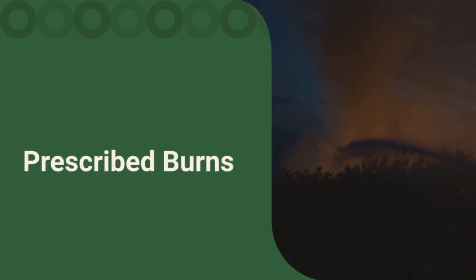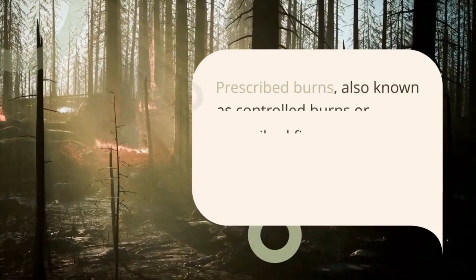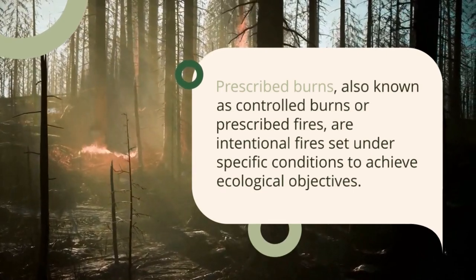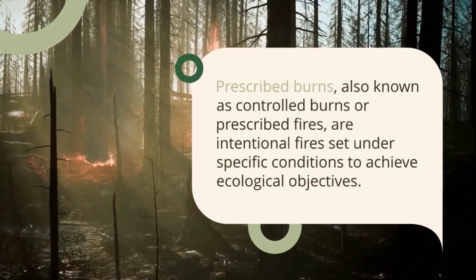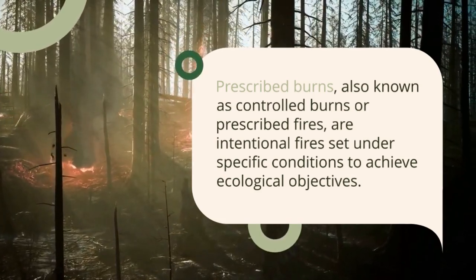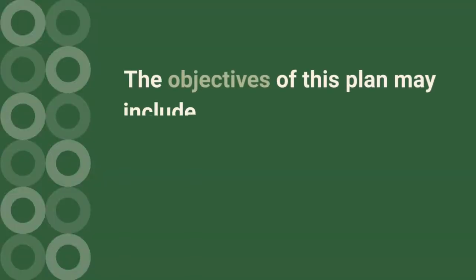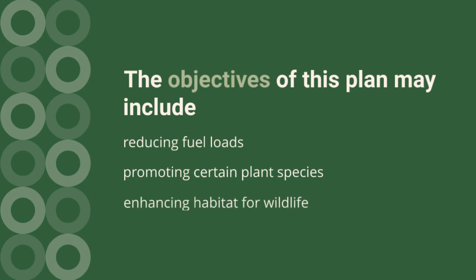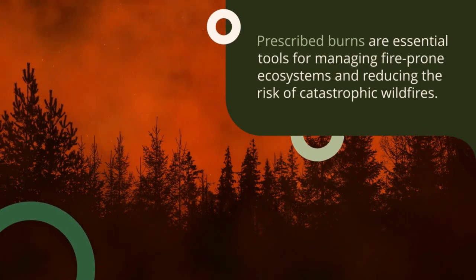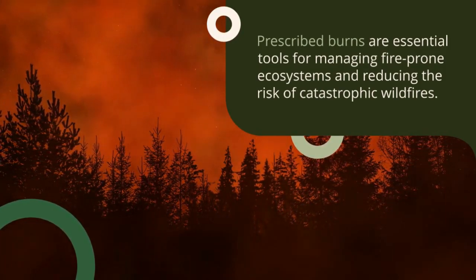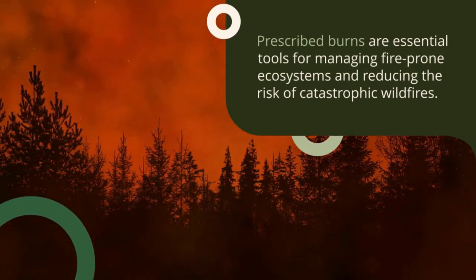Prescribed burns, also known as controlled burns or prescribed fires, are intentional fires set under specific conditions to achieve ecological objectives. These objectives may include reducing fuel loads, promoting certain plant species, and enhancing habitat for wildlife. Prescribed burns are essential tools for managing fire-prone ecosystems and reducing the risk of catastrophic wildfires.